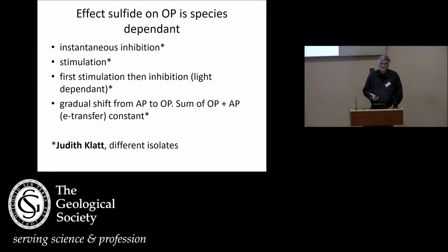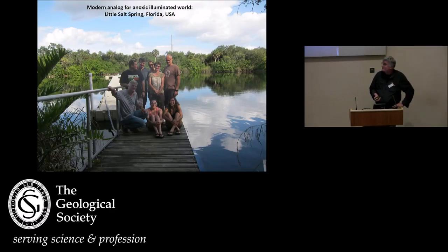One of us, Judith Klutz, a very talented student in my group, has isolated a lot of cyanobacteria from interesting places and found that there are all kinds of responses possible. So sulfide can instantly inhibit oxygenic photosynthesis, that normally happens. It can also, however, stimulate it. It can stimulate it, then inhibit it. It can also be that there are cyanobacteria that can do both at the same time. So, we found it of interest to go to a place where they naturally grow and look in their natural environment. And that is in Little Salt Spring.